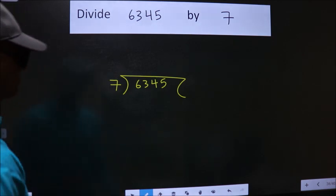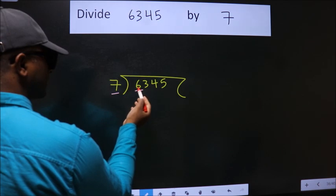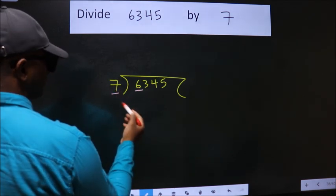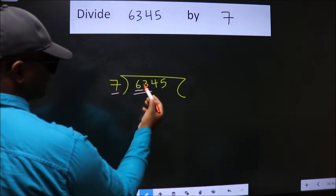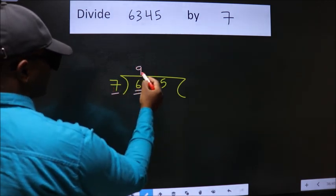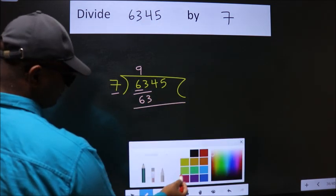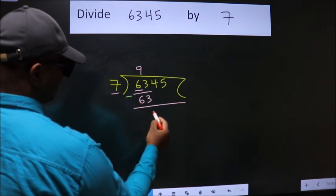Next. Here we have 6. Here 7. 6 is smaller than 7. So we should take 2 numbers, 63. When do we get 63 in 7 table? 7 nines 63. Now we should subtract. We get 0.